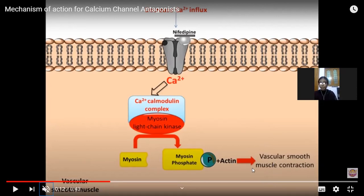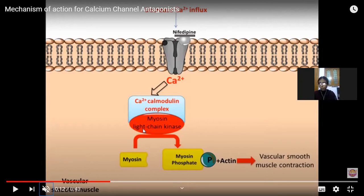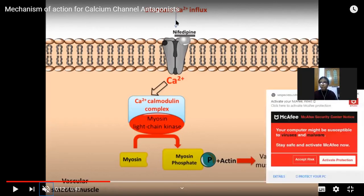To summarize the mechanism of action: calcium channel blocker drugs like nifedipine bind to the calcium channels of smooth muscles, leading to blockage of the calcium-calmodulin complex, inactivation of myosin light chain kinase, inhibition of conversion of myosin to myosin phosphate, and ultimately smooth muscle relaxation. This is the general mechanism of action of calcium channel antagonists.